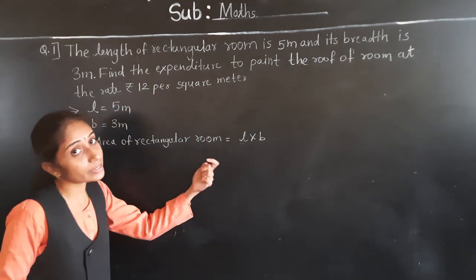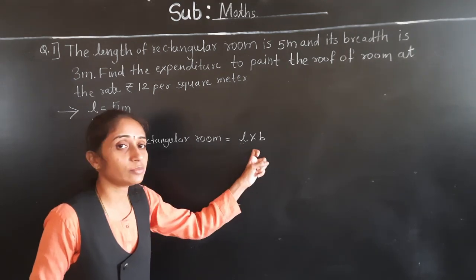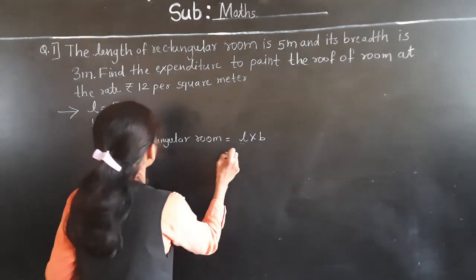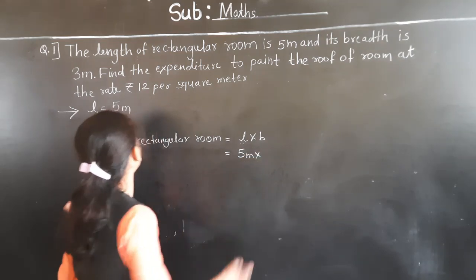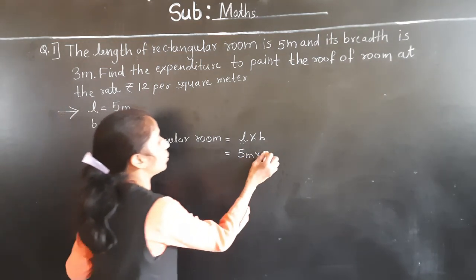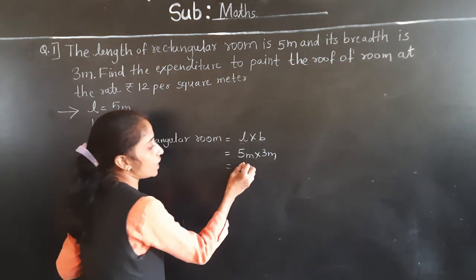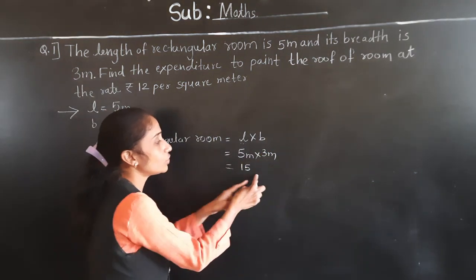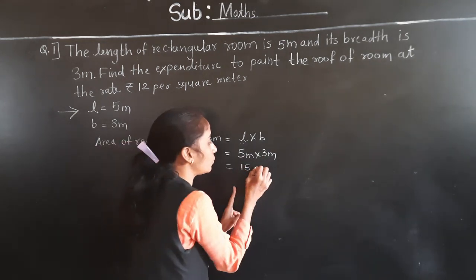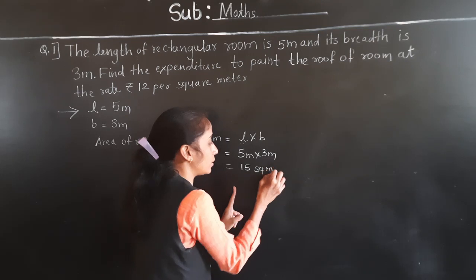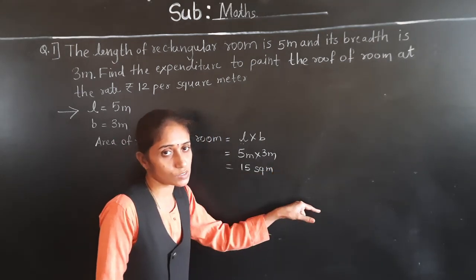The room is rectangular in shape. The formula for area of rectangle is length multiplied by breadth. Length is 5 meters and breadth is 3 meters. So 5 × 3 = 15. The unit for area is square meter — we write square meter or meter square.